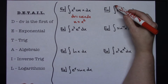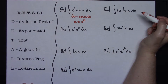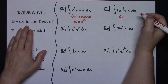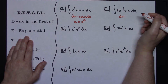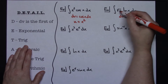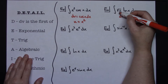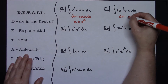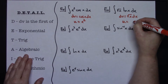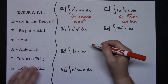In the second example, integrating the square root of x times the natural log of x dx. Starting with DV: is there an exponential? No. A trig function? No. An algebraic function? Yes — the square root of x is algebraic, so DV equals square root of x dx. That leaves U as the natural log of x.